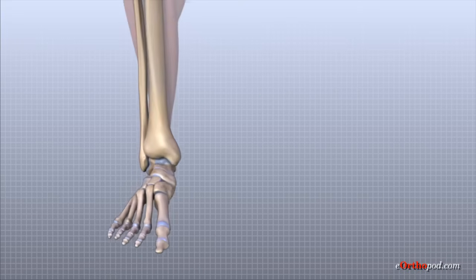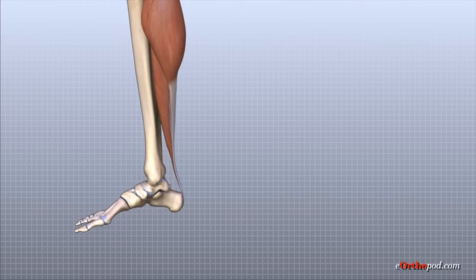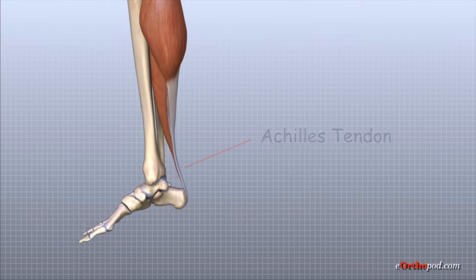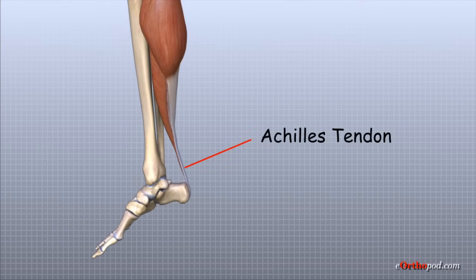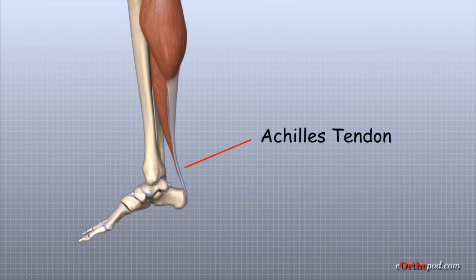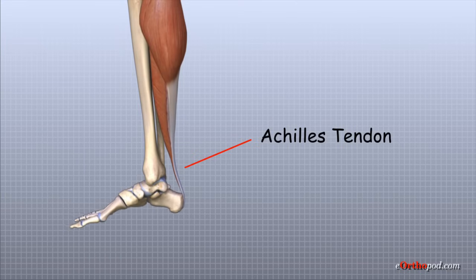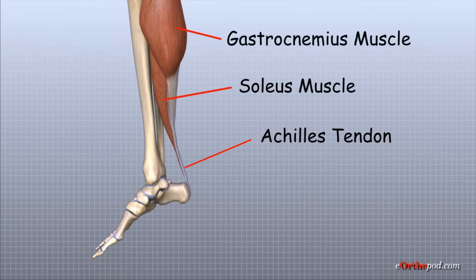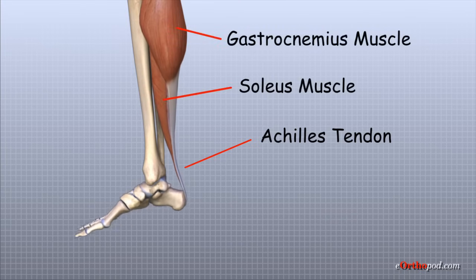Several muscles and tendons are important for ankle joint function. The large Achilles tendon is the most important tendon for walking, running, and jumping. It attaches the two calf muscles — the gastrocnemius and the soleus — to the calcaneus, and allows us to raise up on our toes.